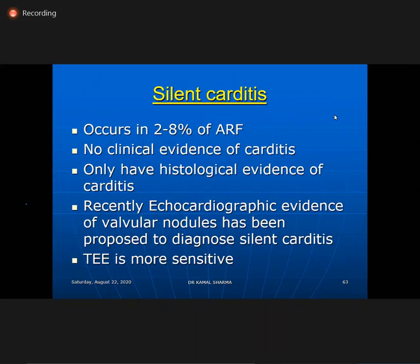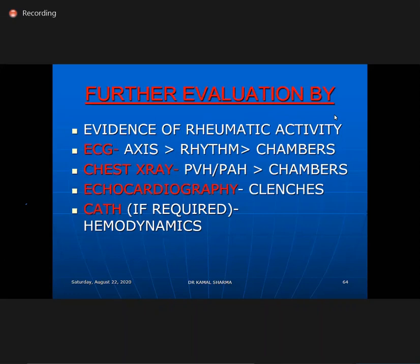Silent carditis occurs in 2-8% of ARF with no clinical evidence — TEE is the only finding. To justify diagnosis: ECG axis tells you the dominant lesion more than chamber enlargement alone. If axis is rightward in a patient with aortic and mitral disease, you are dealing with predominantly a mitral lesion. After axis, look at rhythm — AF indicates mitral disease. Then look at chambers. In X-ray, pulmonary venous or arterial hypertension indicates dominant mitral valve disease; absence of PVH indicates aortic valve disease.